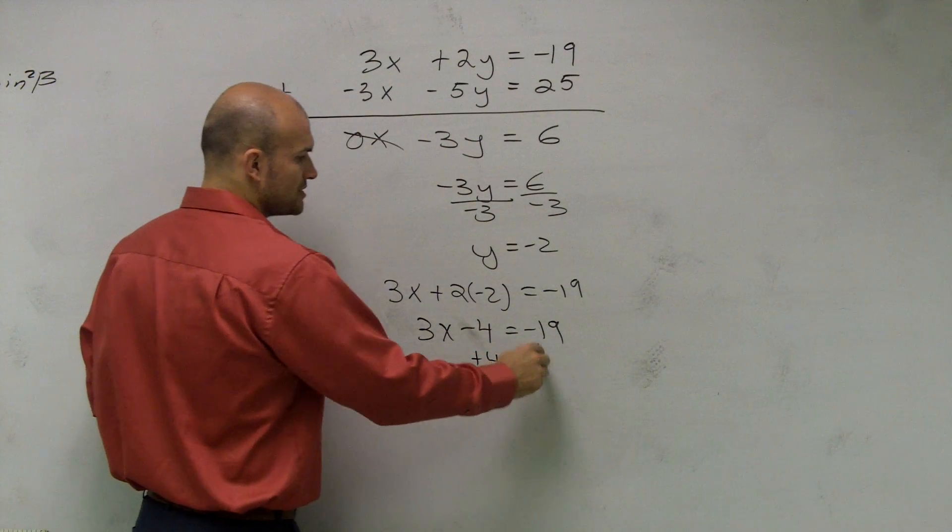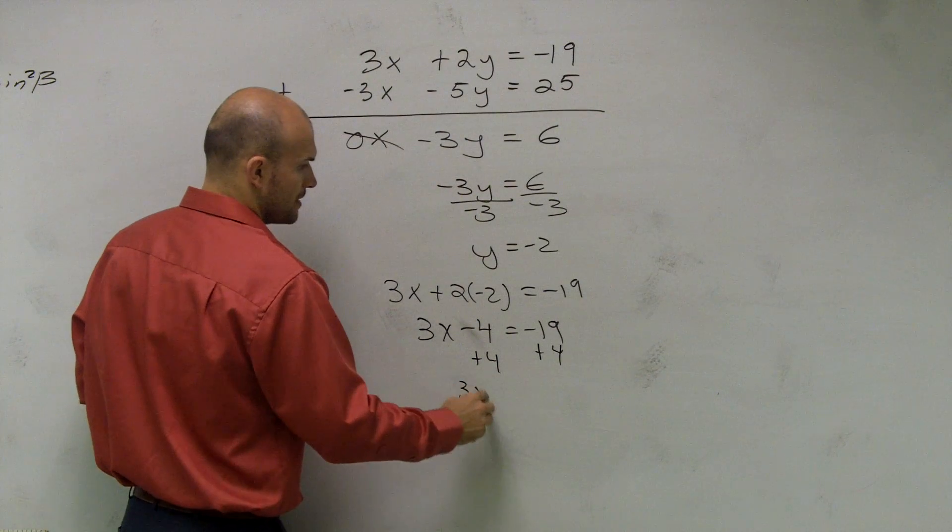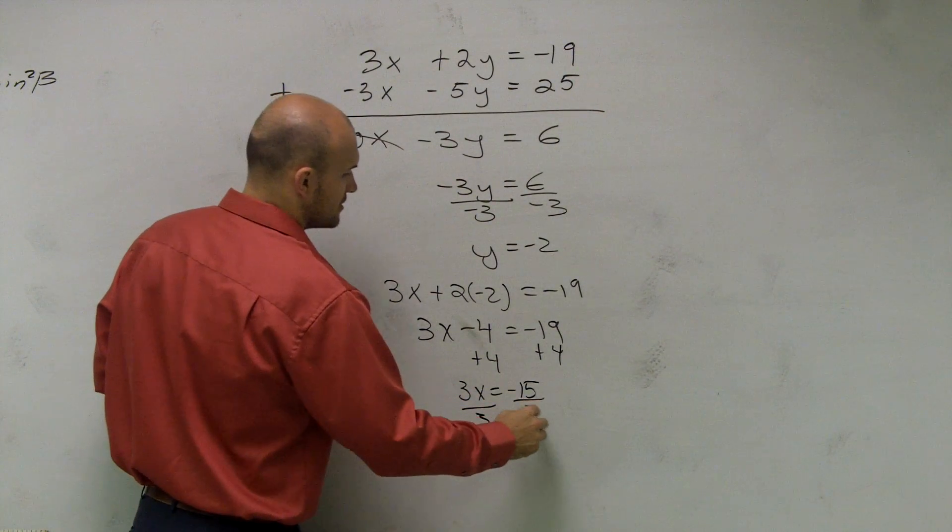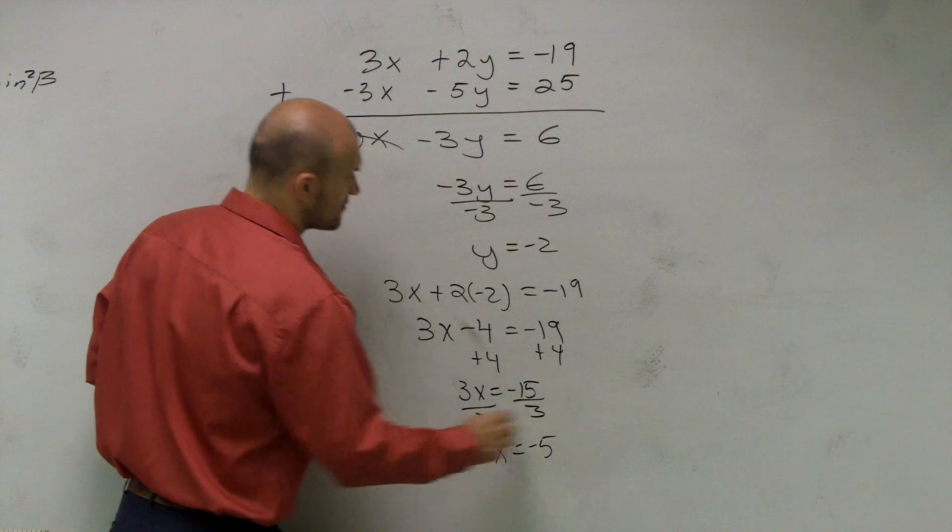Undo subtraction of 4 by adding 4 to the other side. 3x equals a negative 15 divided by 3, x equals negative 5.